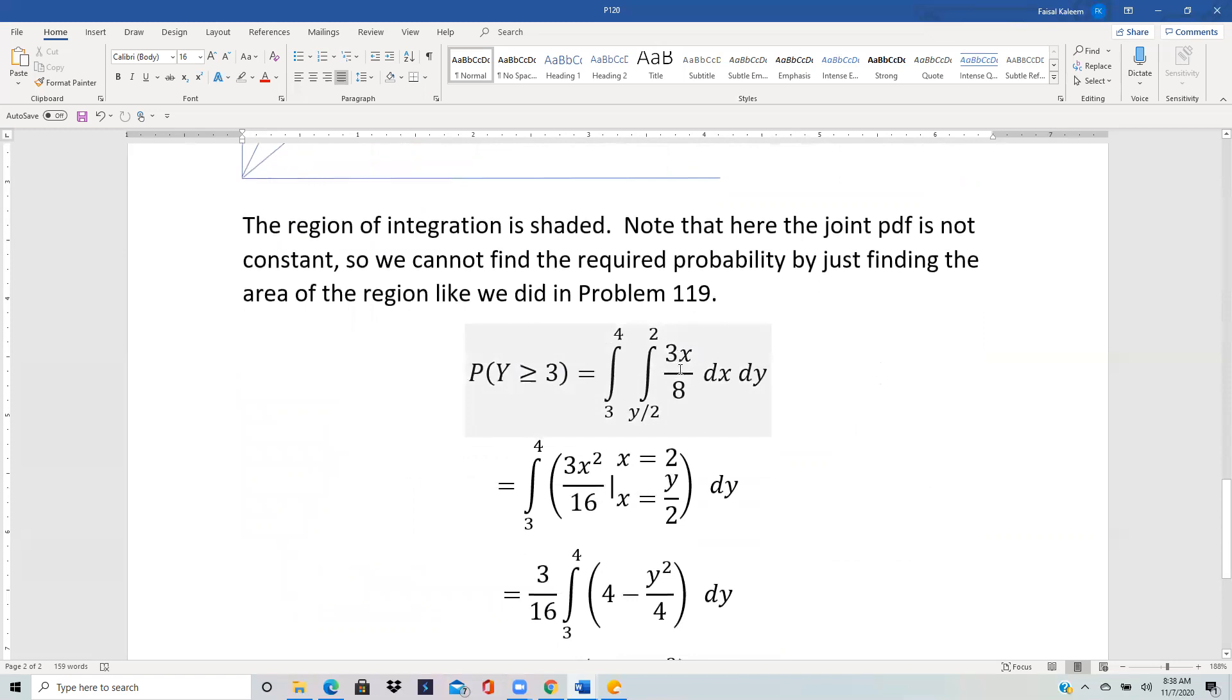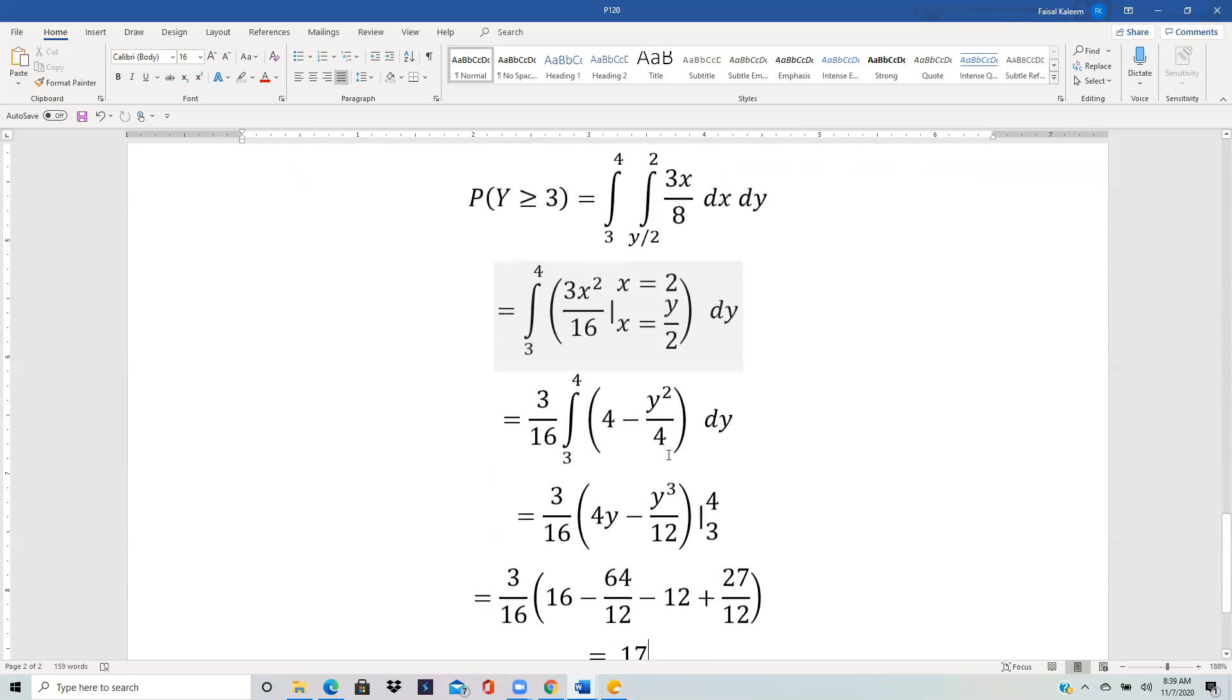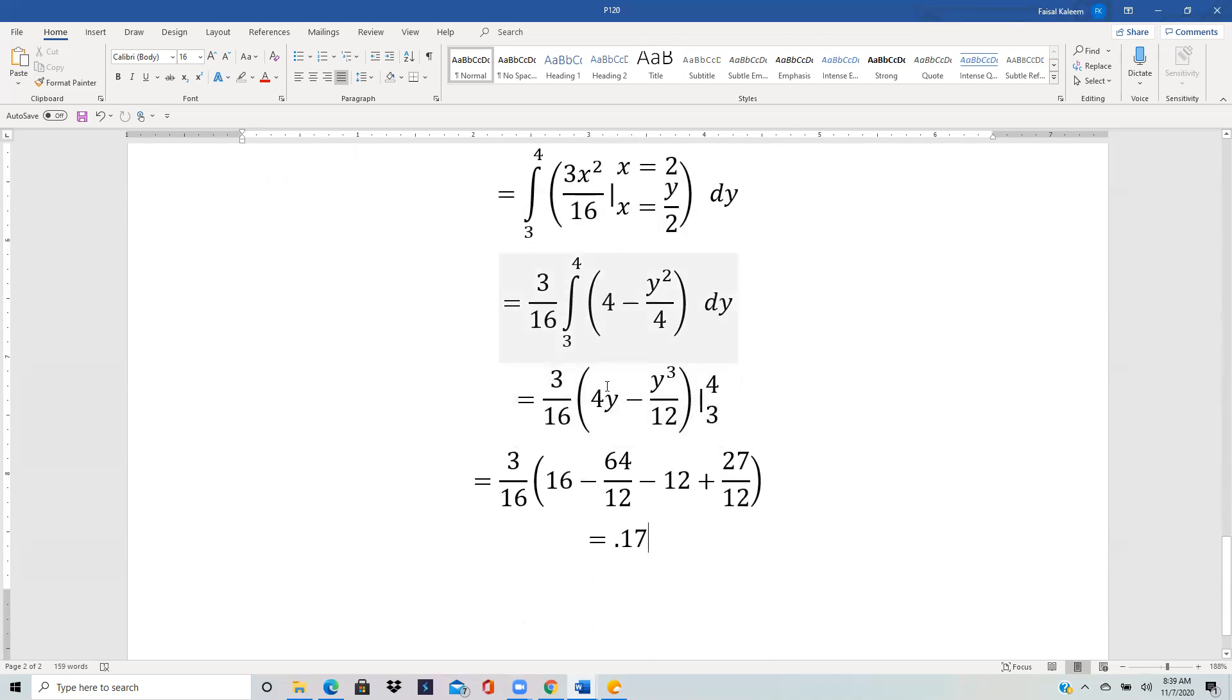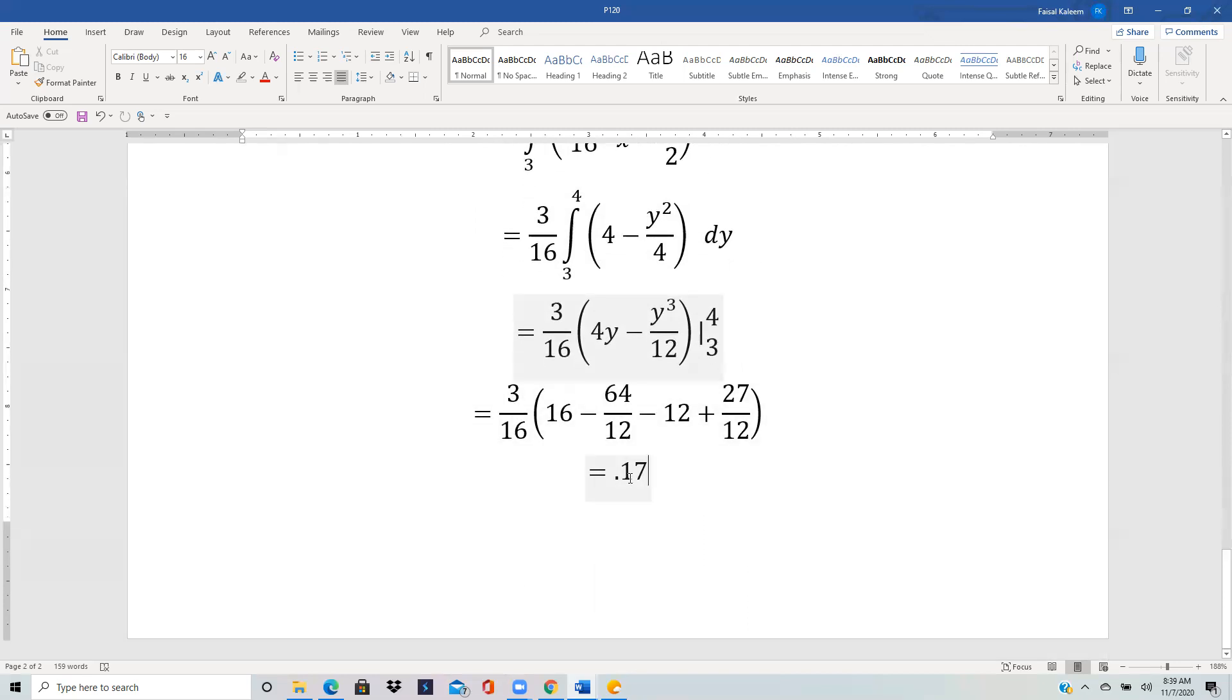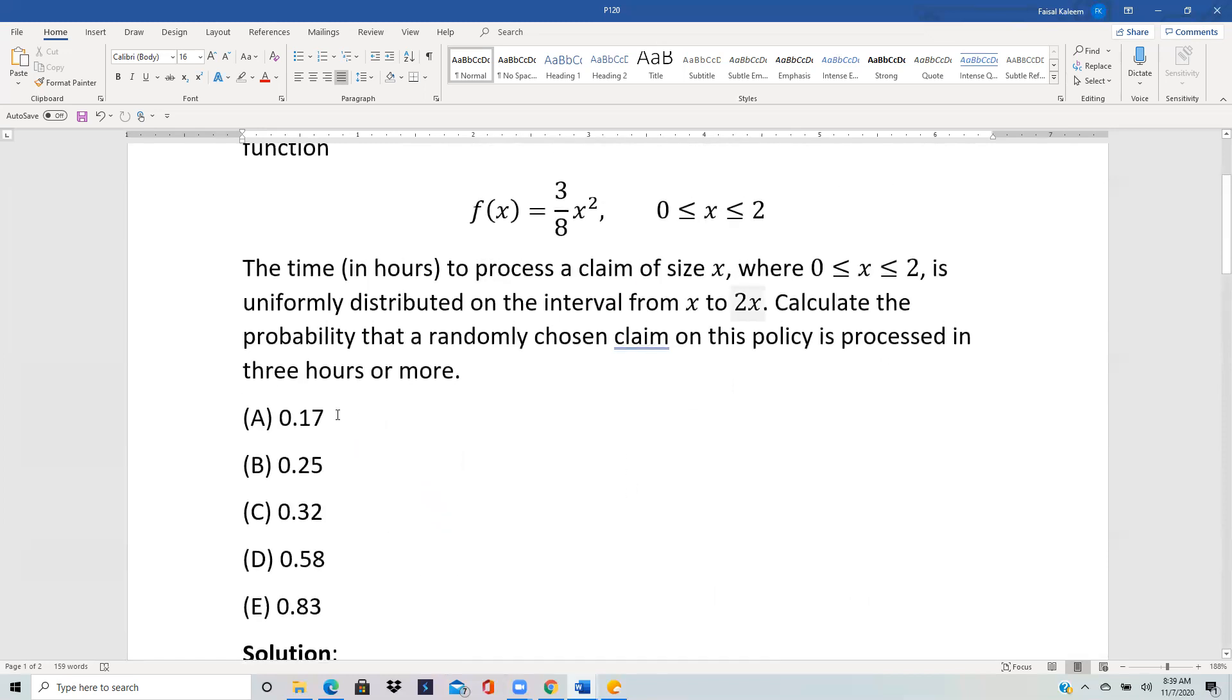And the pdf, the joint pdf, was 3x by 8, so you double integrate that over that yellow region. So this is 3x squared by 16, and x going from y by 2 to 2. Pull the 3 by 16 out now. So this is just x squared, so it'd be 2 squared which is 4, and then you put y by 2 whole squared, it'd be y squared by 4. And then the integral of 4 is 4y, y squared is y cubed by 3, so it becomes y cubed by 12. Put in the bounds and in the end you get 0.17, which is choice A.